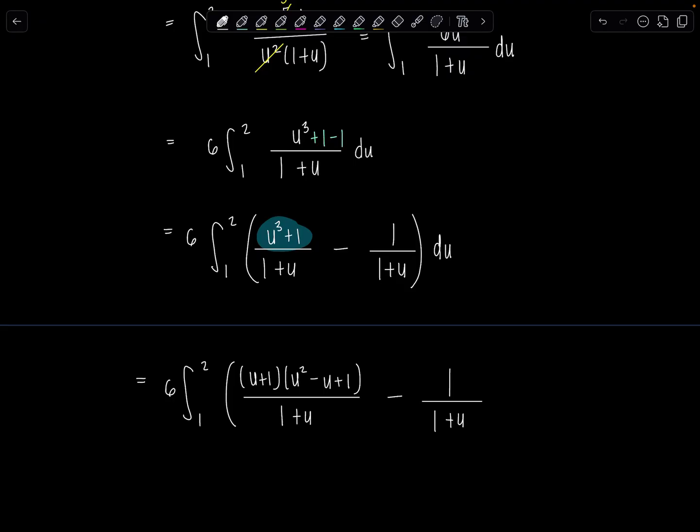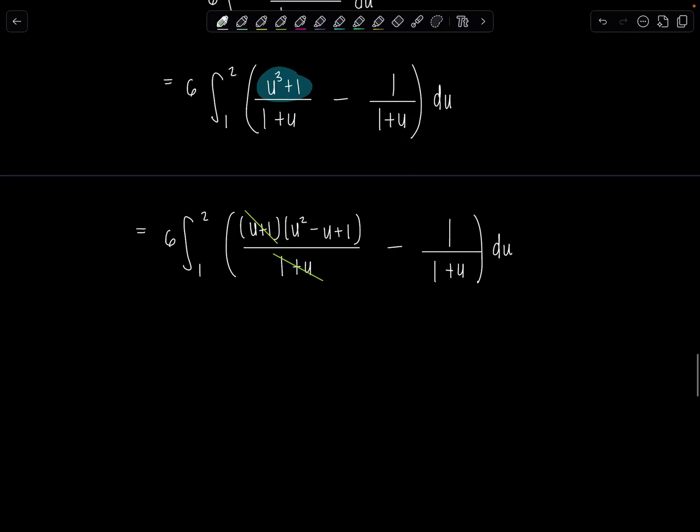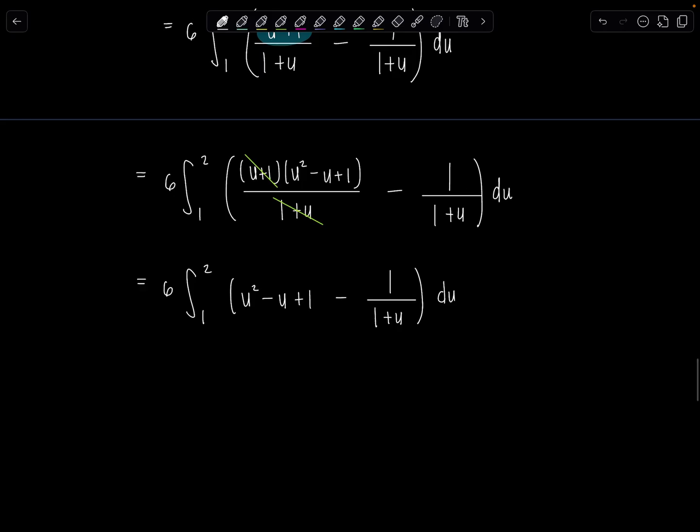Because now I can cancel that 1 plus u in the denominator, and that was exactly what was terrorizing me this whole time. And then now all I'm left with is 6 integral 1 to 2, u squared minus u plus 1 minus 1 over 1 plus u du. And then we can just integrate term by term. We have a relaxing little polynomial, and then we just have this one little term. I know its antiderivative, it's just going to involve natural log.